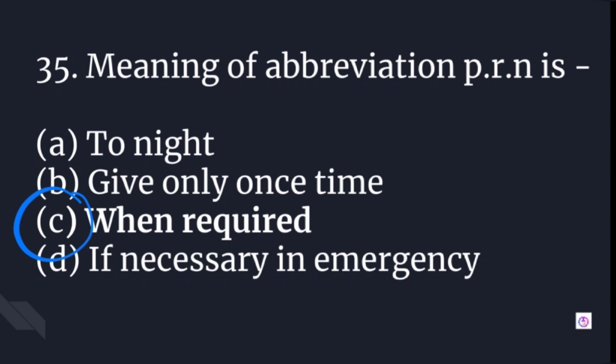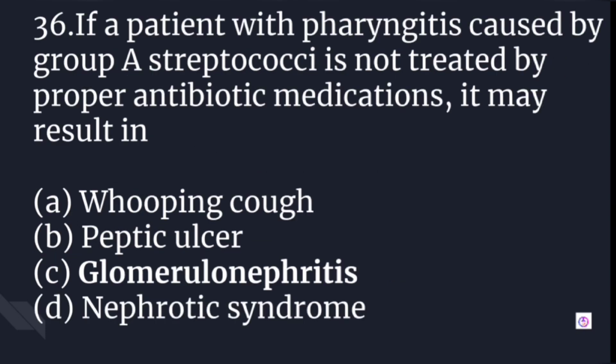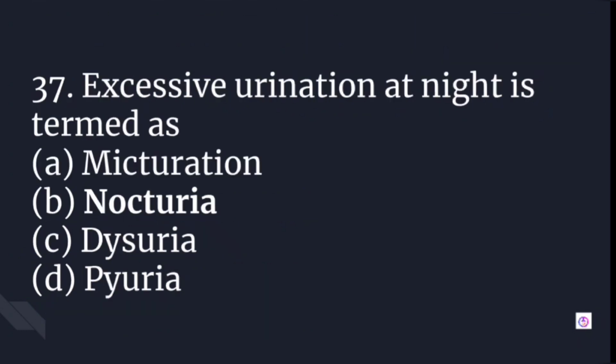If a patient with pharyngitis caused by Group A Streptococci is not treated with proper antibiotic medications, it may result in glomerulonephritis. Excessive urination at night is termed nocturia.